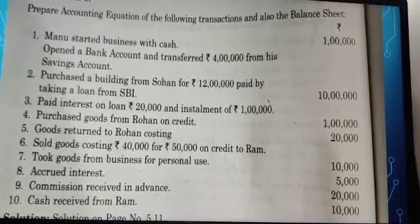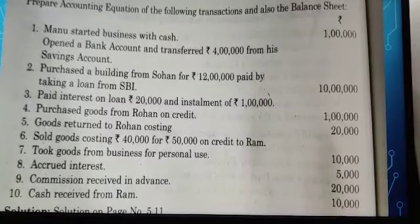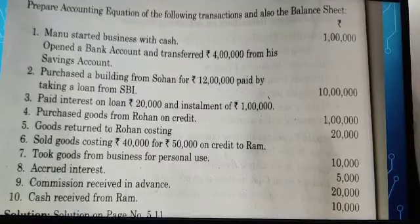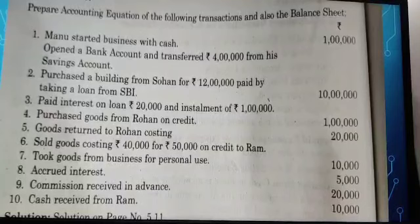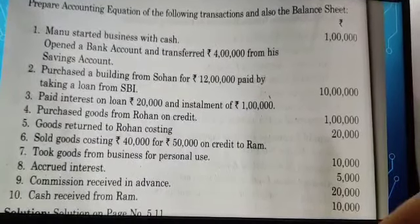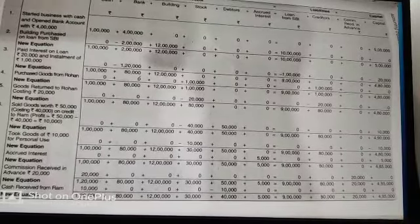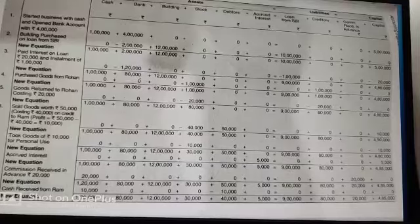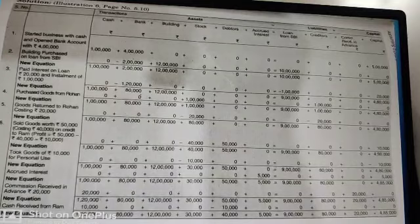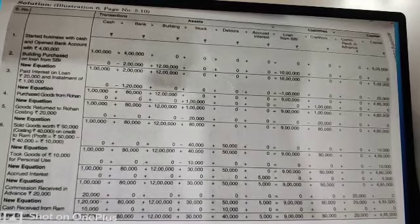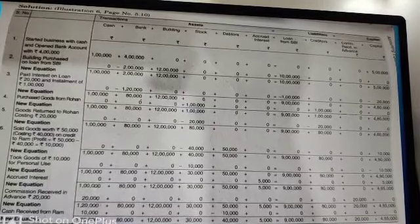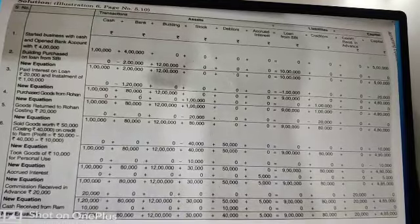The next question: Manu started business with cash rupees 1 lakh and opened a bank account, transferring rupees 4 lakh from his savings account. He is starting his business — this is the business investment. Transaction one: started business with cash rupees 1 lakh and bank rupees 4 lakh. Since he's investing 4 lakh plus 1 lakh equals rupees 5 lakh, which is your capital for the time being.